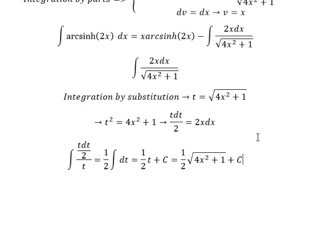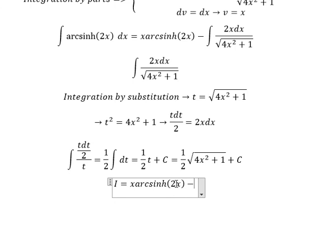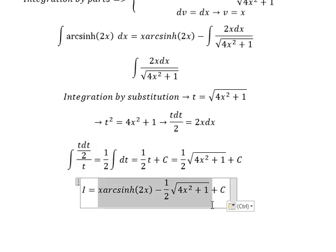Now we compile the answer. The final answer is I = x·arcsinh(2x) - 1/2·√(4x² + 1) + C. That's the end, thank you for watching.